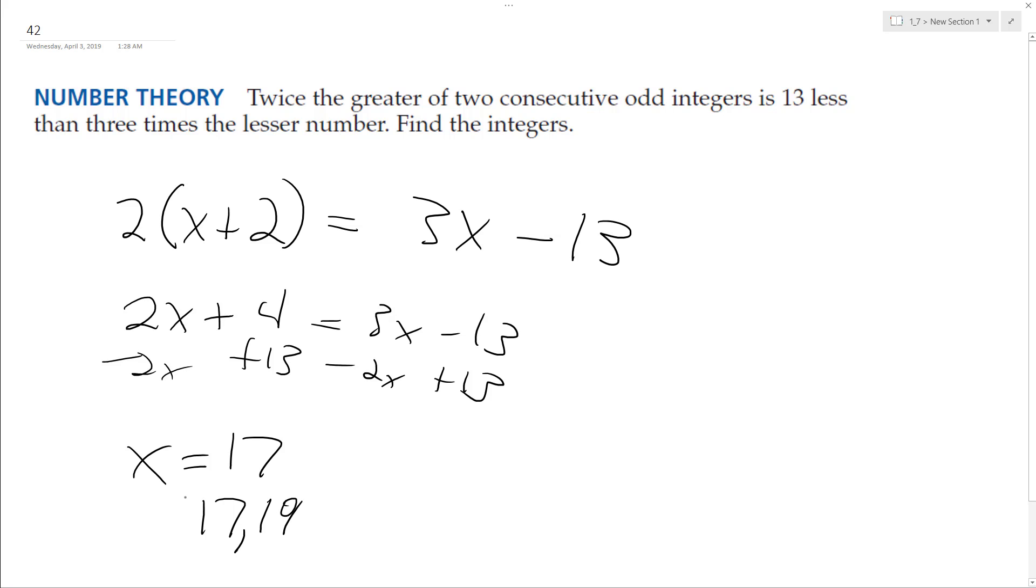Let's check these out. So 2 times 17 plus 2 - the thing is though, 17 plus 2 is the other one, so it's 2 times the larger one. So 2 times 19 is equal to 3 times 17 minus 13. This is equal to 38 equals 54 minus 13, so that's 44.